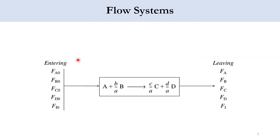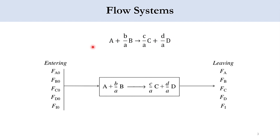Let's assume a flow system in which one mole of A reacts with b/a moles of B, producing c/a moles of C plus d/a moles of D. The stoichiometric coefficient of the limiting reactant A is made one by dividing the whole equation by the stoichiometric coefficient 'a' of species A.